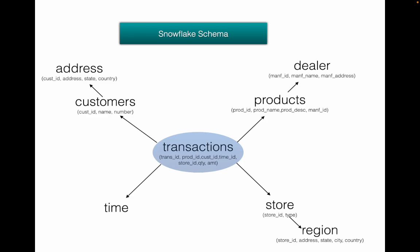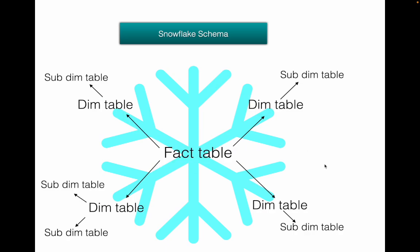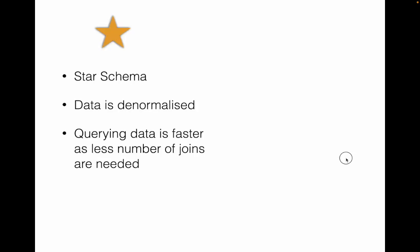This structure represents something like a snowflake, where you have a center fact table and then multiple dimension and sub-dimension tables. That is essentially a snowflake schema — where you normalize the dimension tables, unlike the denormalized dimension tables in a star schema.